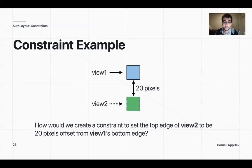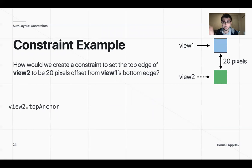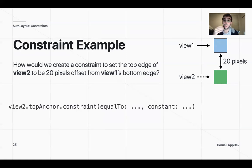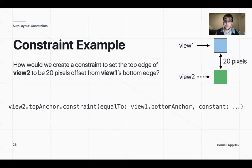Let's do some concrete examples. If I want to create a constraint to set the top edge of view 2 to be 20 pixels offset from view 1's bottom edge, I need to constrain view 2's top anchor. I want it to be equal to view 1 dot bottom anchor, offset by 20.